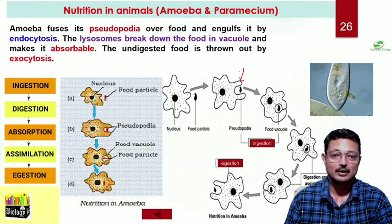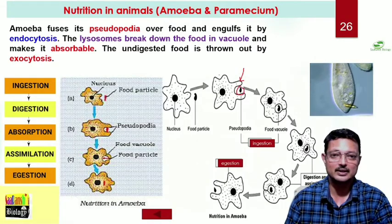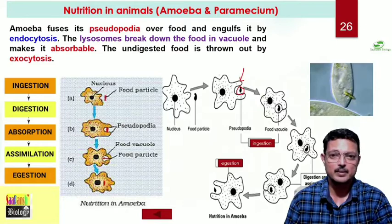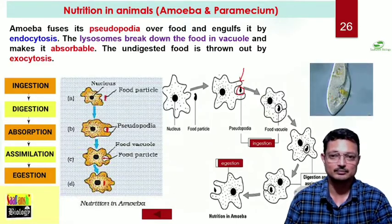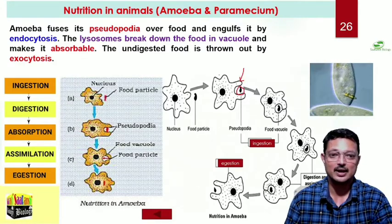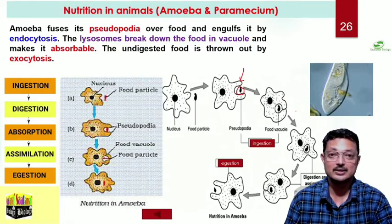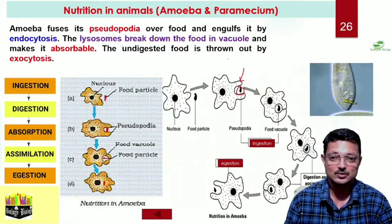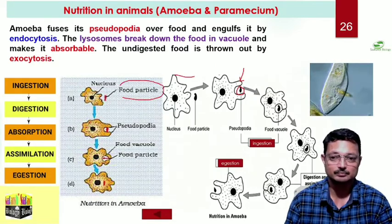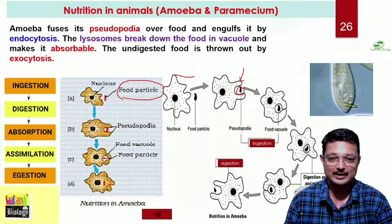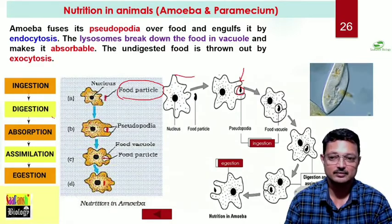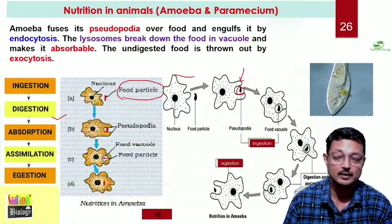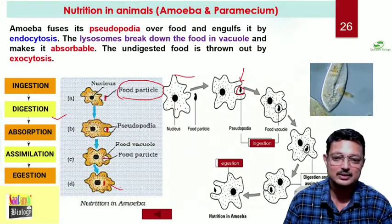These pseudopodia wrap around the food, engulf it, and take the food inside. Inside the cell, the lysosome mixes with the vacuole and then digests the food. So food becomes absorbable, and the undigested food material is thrown outside again by the process of exocytosis. You have read in class 9th about movement inside the cell by endocytosis or exocytosis. So ingestion - the food particle comes near, pseudopodia wraps around, it is taken inside, then digested with the help of the food vacuole. That's digestion. Then digested food material is absorbed inside the cell - absorption. It is utilized for making cell components - assimilation. And ultimately by exocytosis, the undigested food material is given out.